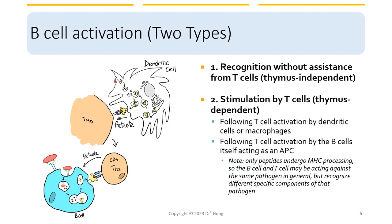In the last slide, we bring T cells into the picture, meaning there is some type of thymus-dependent mechanism there. When we have thymus-dependent, we also have a way to activate B cells without the thymus — so thymus-independent. We'll come back to that. First, let's look at the thymus-dependent pathway.